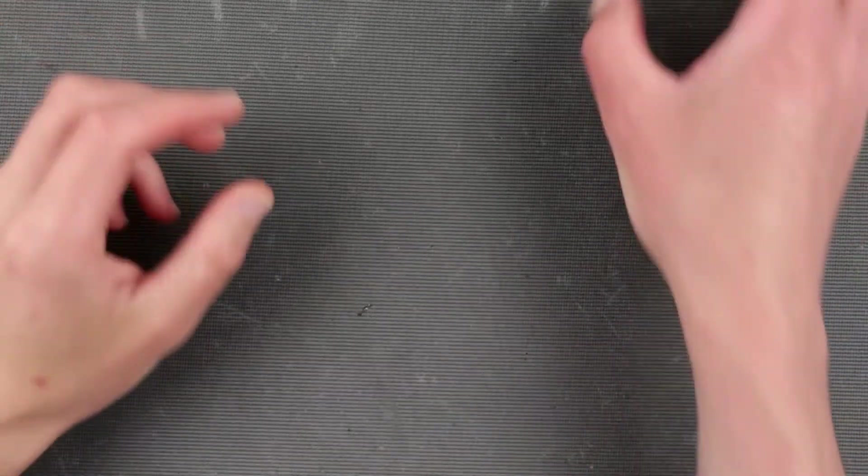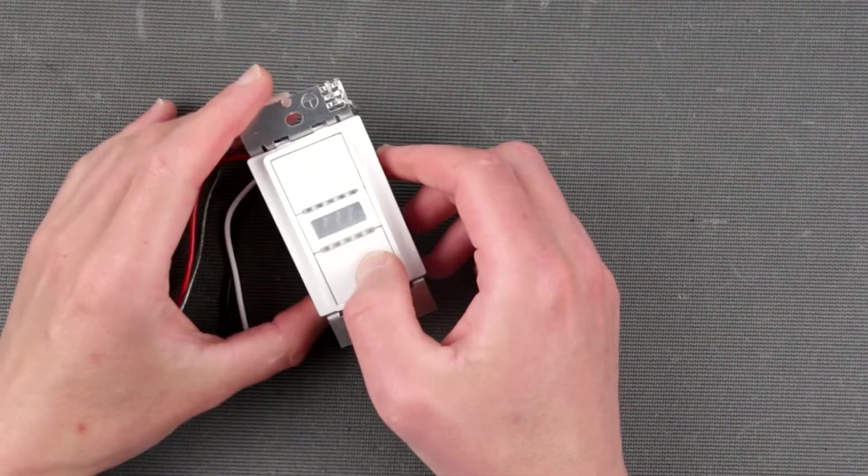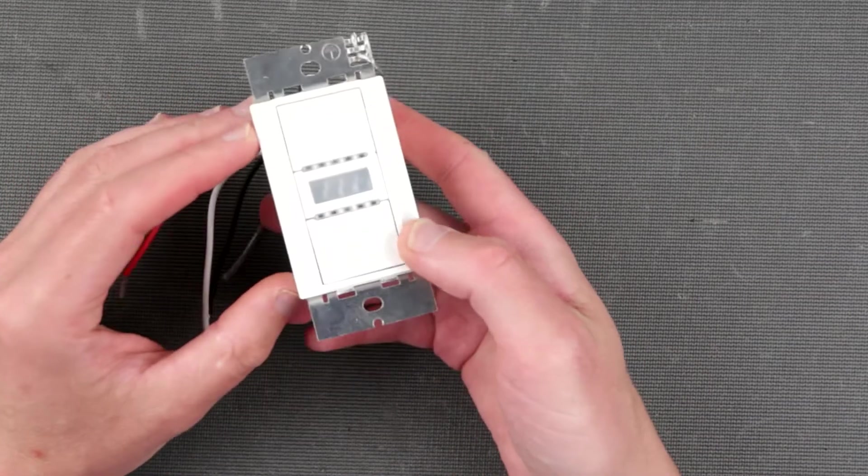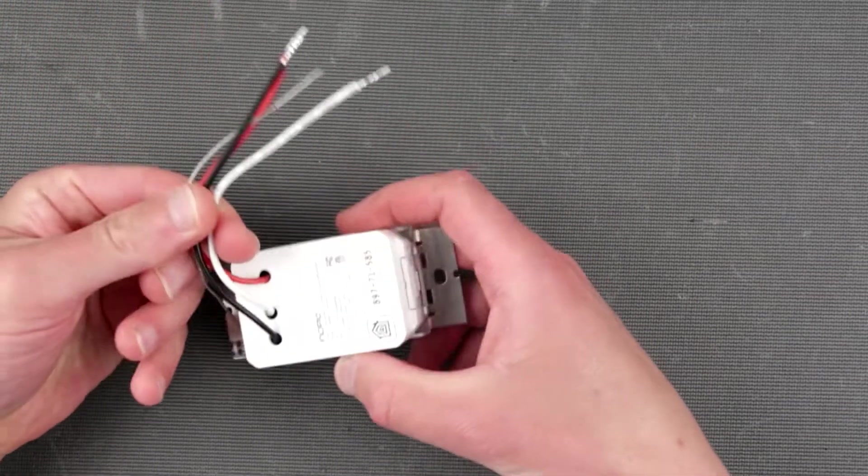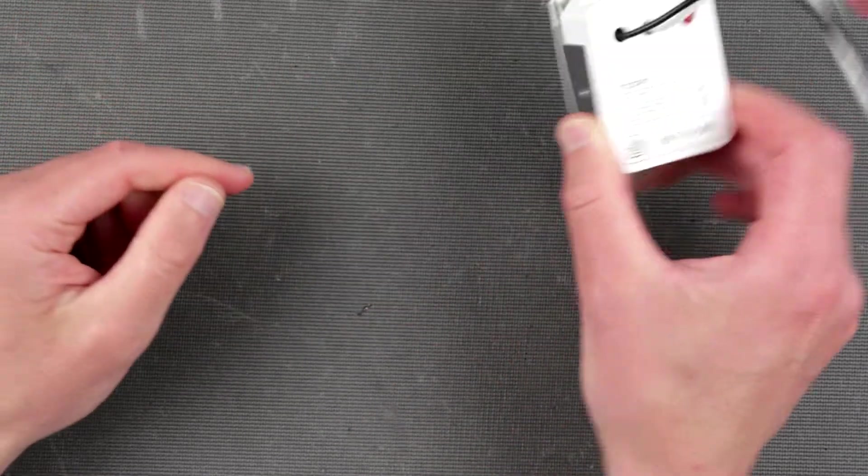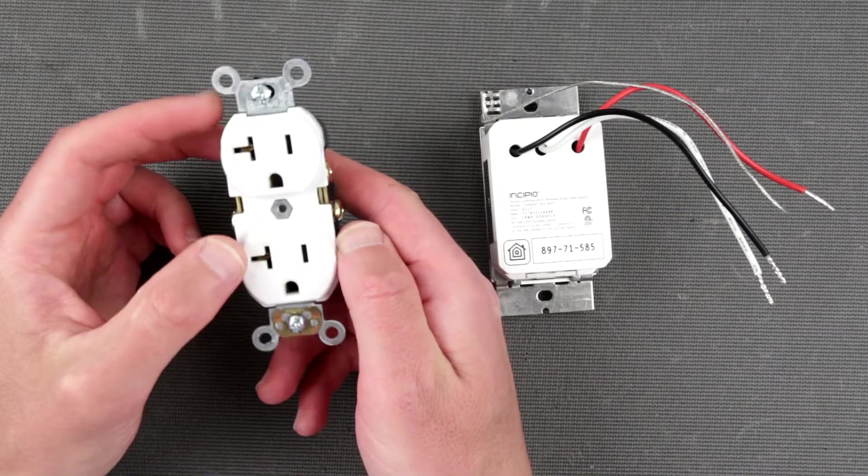So what would we need to make this dimmable box work? Obviously we need a dimmer. In this particular case I have this one. It can be any other dimmer because all of them would have four wires like this. Then we need an outlet, so this is a power outlet, standard North American power outlet.